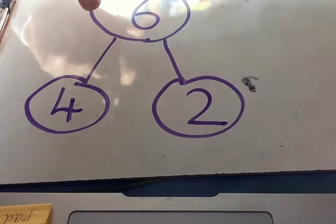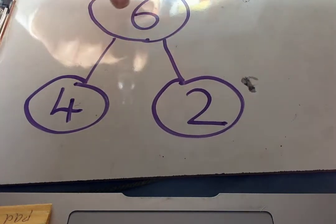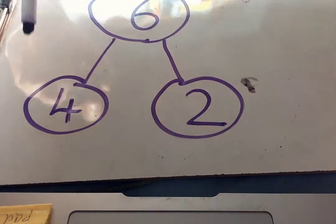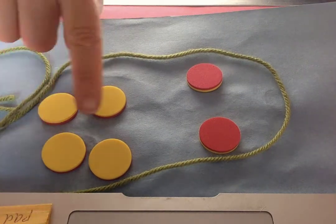The whole thing goes here in the top circle, and then there are two lines to the parts that make it. Parts of six, four, and two.